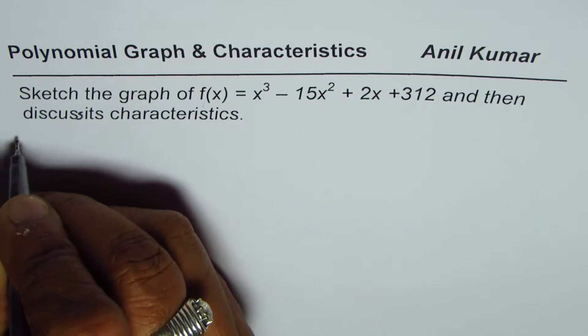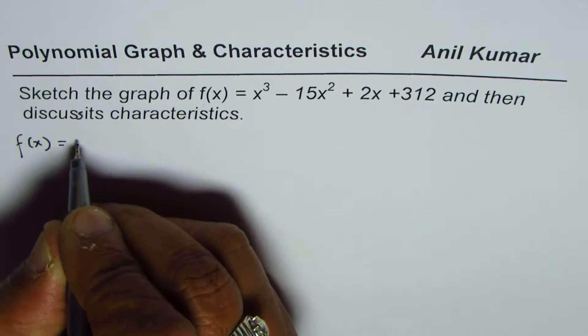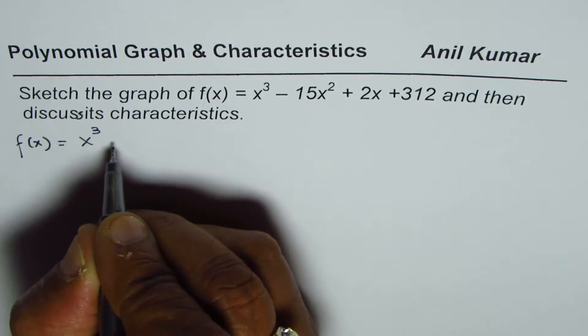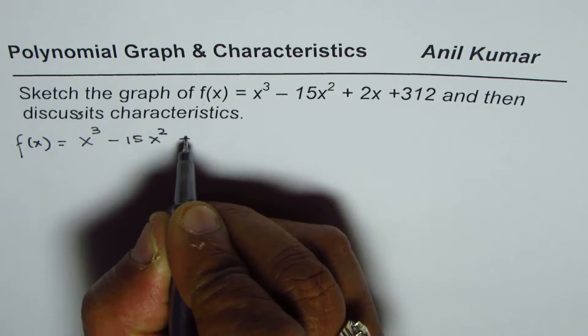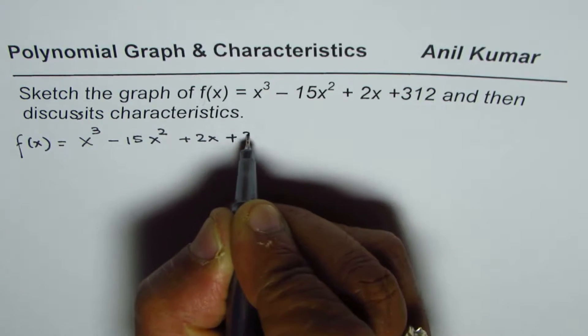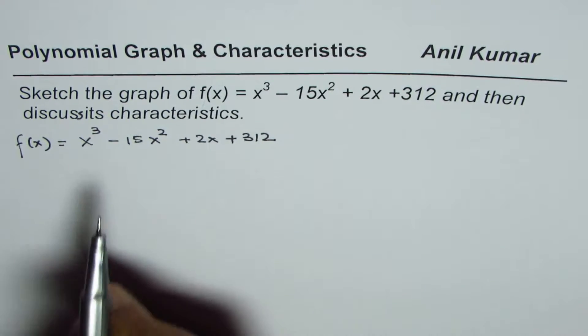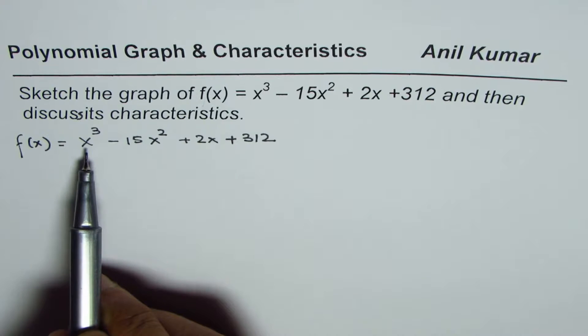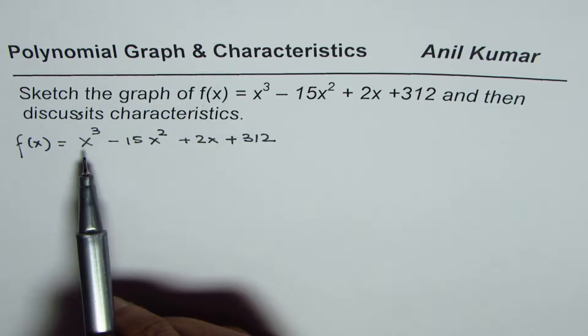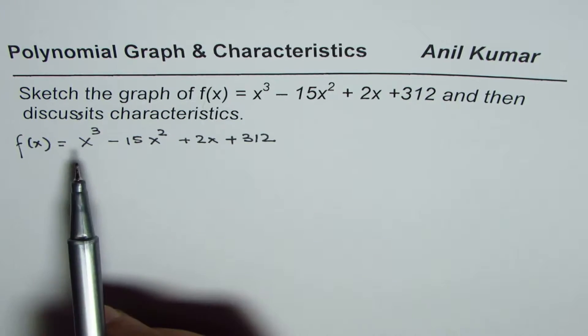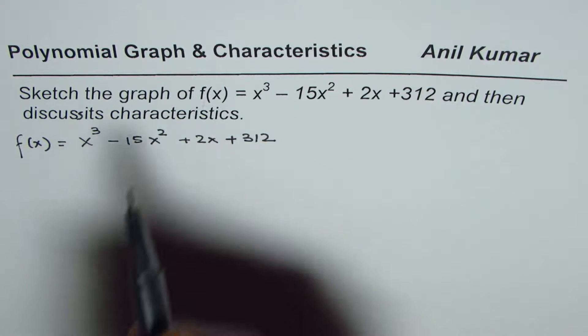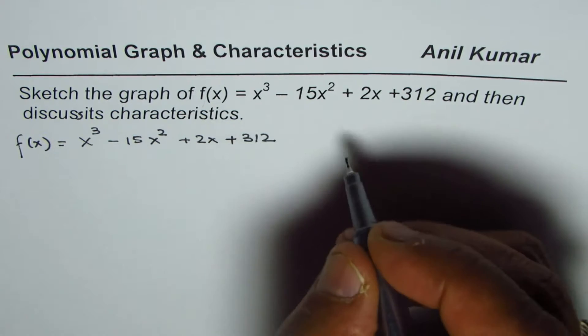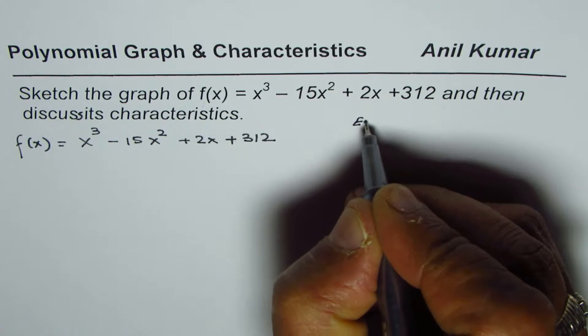So we are given the function f(x) = x³ - 15x² + 2x + 312. Now it's a cubic equation that means the domain and range is all real numbers and end behavior we can find from the leading coefficient. The end behavior for this function will be, let's write down here, end behavior.